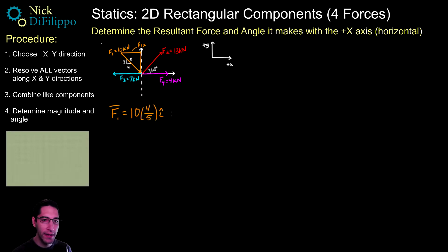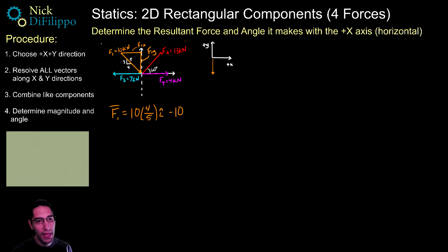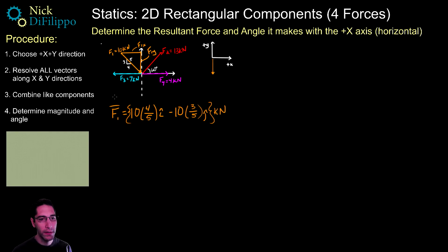For F1y, this component is pointing downward, which is against my positive direction, so I have to subtract it. F1y = −10 × (3/5) in the j direction, in kilonewtons. So F1 = 8i − 6j kilonewtons.